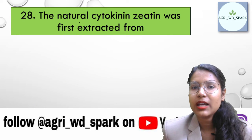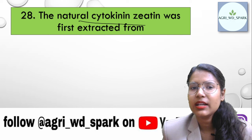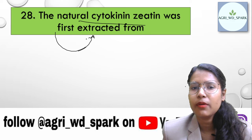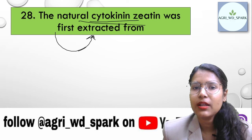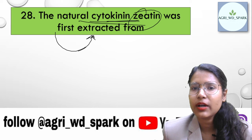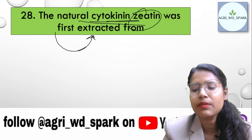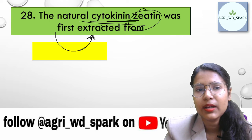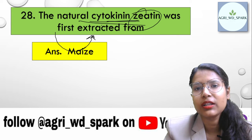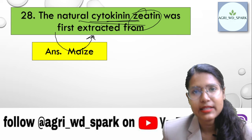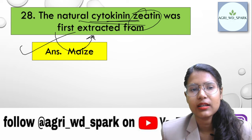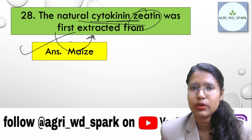The natural cytokinin zeatin was first extracted from maize. It was from the maize plant that the first natural cytokinin was extracted.